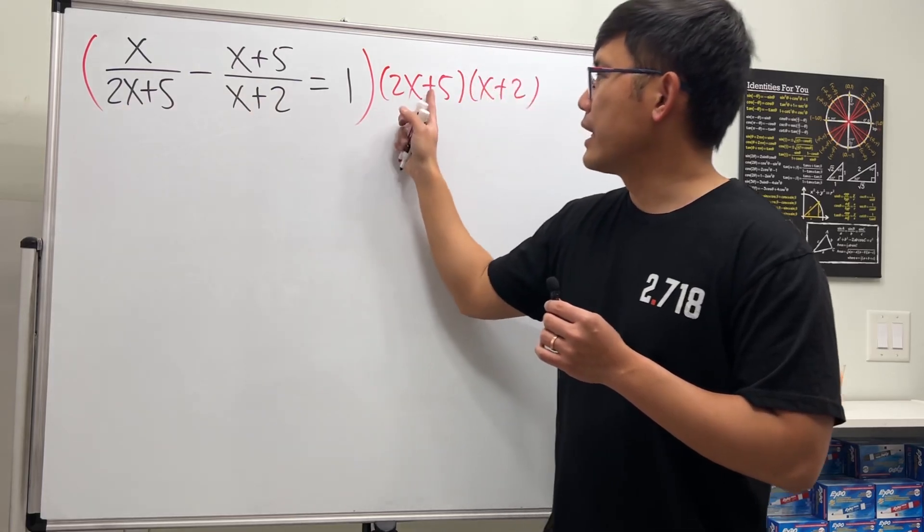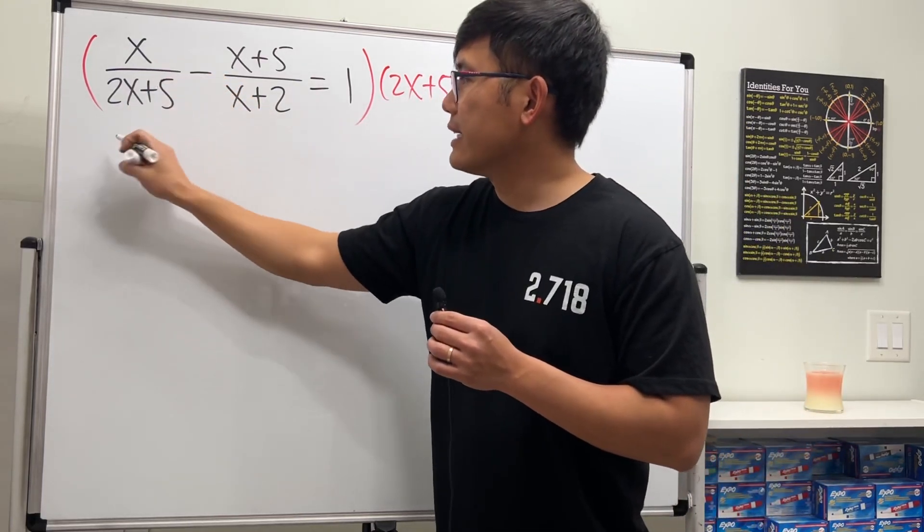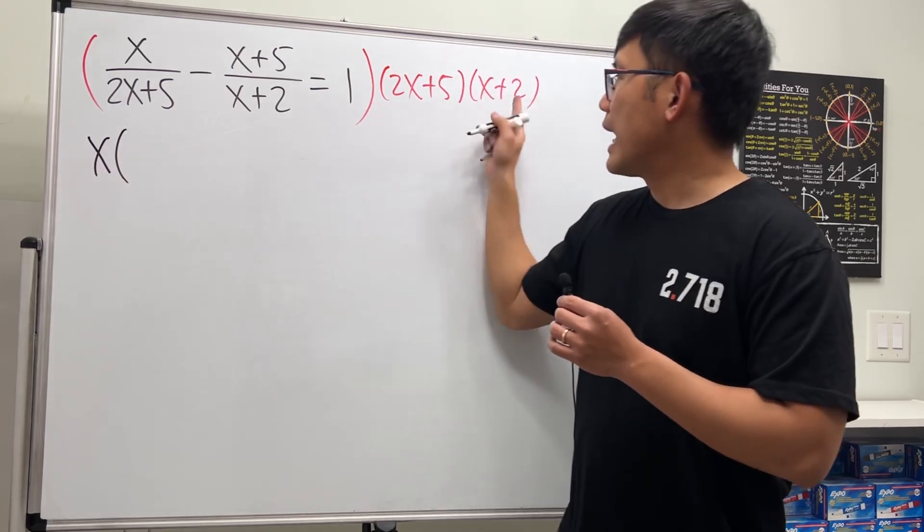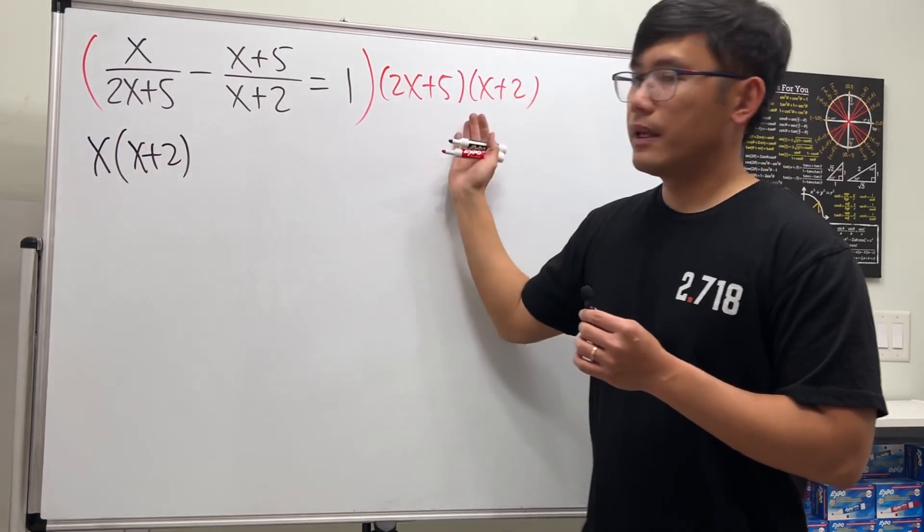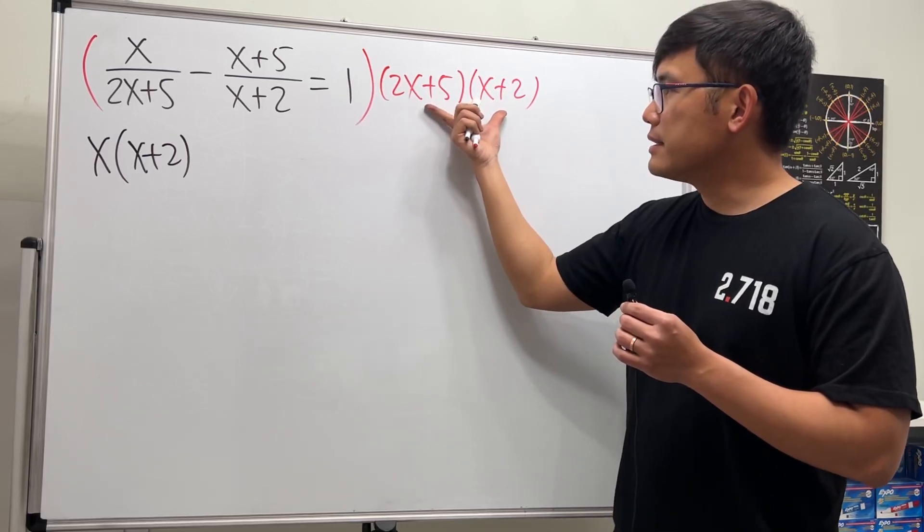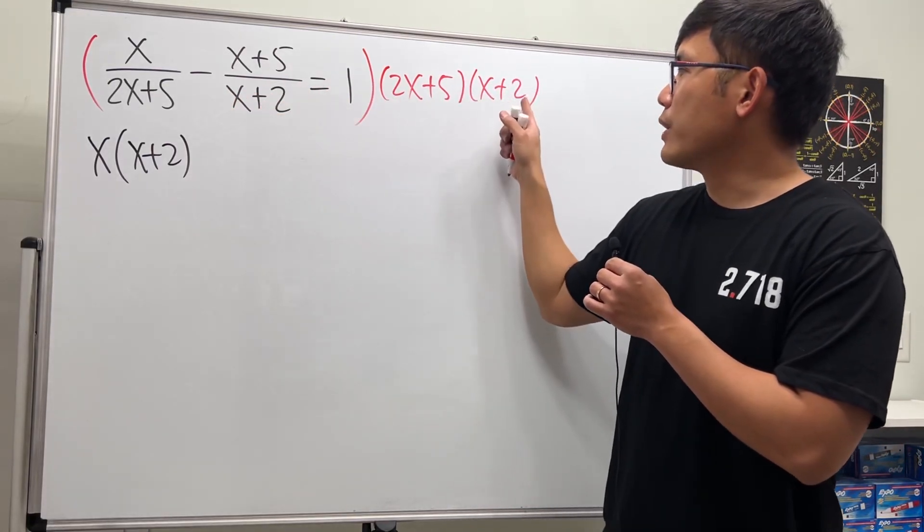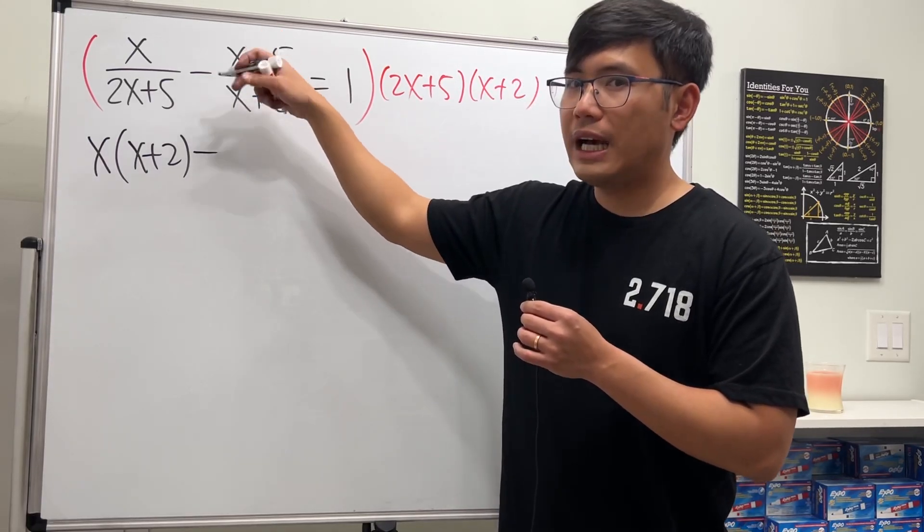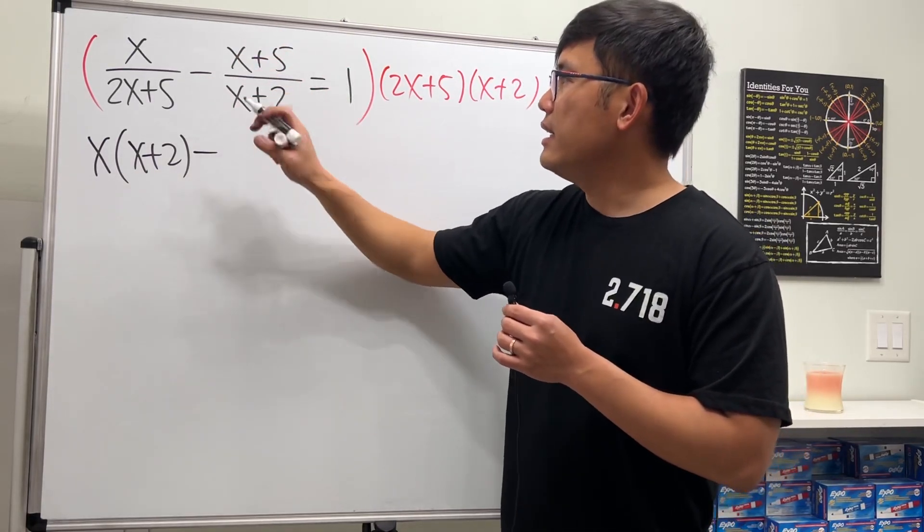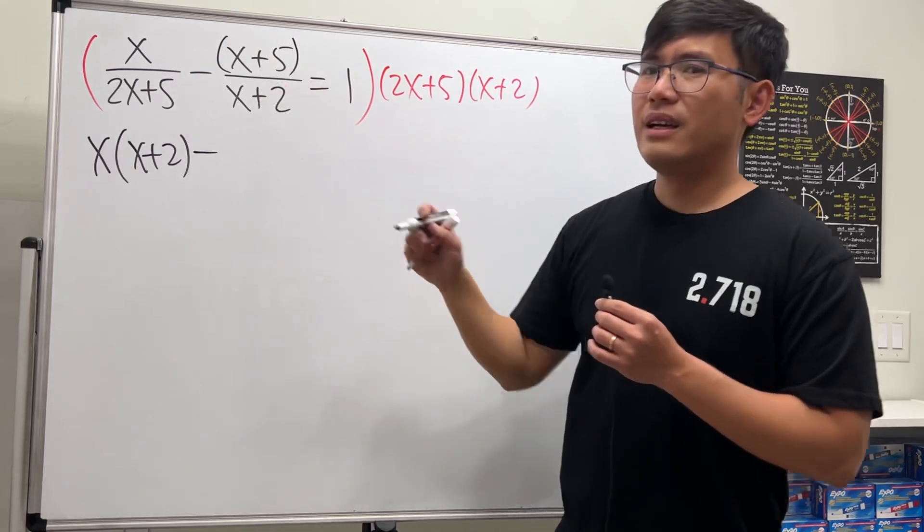This means we'll take this times the first term, and 2x plus 5 will cancel, so we will have the x right here times this, which is the x plus 2. Then we continue—we take this and multiply by that, the x plus 2 will cancel, and this is the minus.